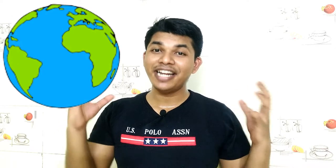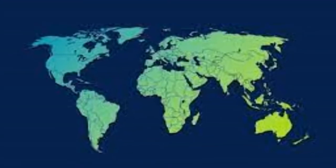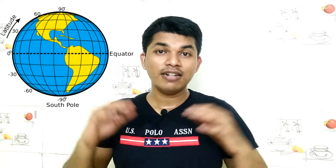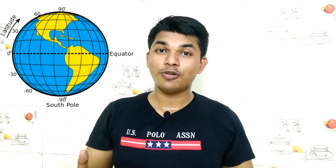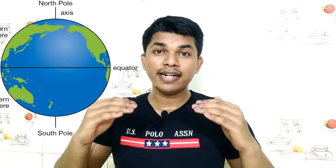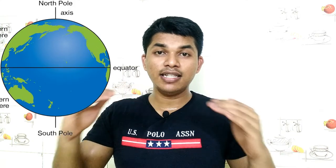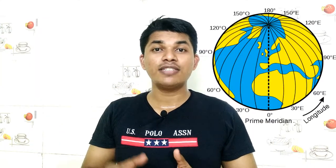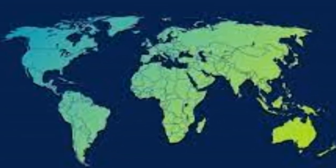Latitude and longitude help us convert the three-dimensional earth into a two-dimensional world map. The lines which run horizontally over the surface of the earth are known as latitude, and the exact line which cuts the earth in half is known as the equator. Similarly, the imaginary lines which run over the earth vertically are known as longitude, and the vertical line which divides the earth in half is known as the prime meridian.